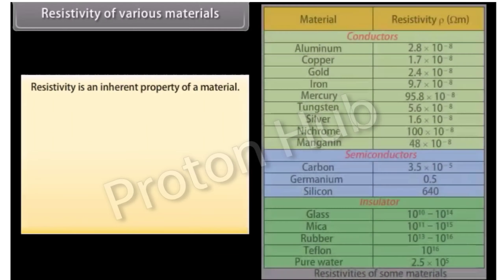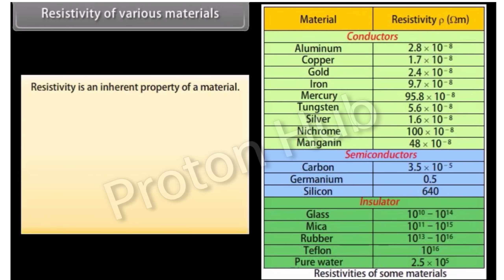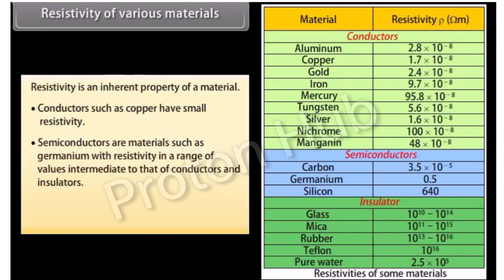Resistivity is an inherent property of a material. Conductors such as copper have small resistivity. Semiconductors, such as germanium, have resistivity in a range of values intermediate to that of conductors and insulators. Insulators such as rubber have large resistivity.